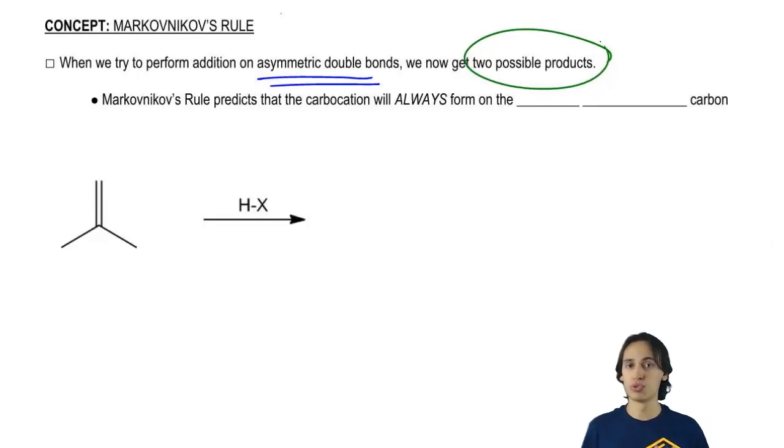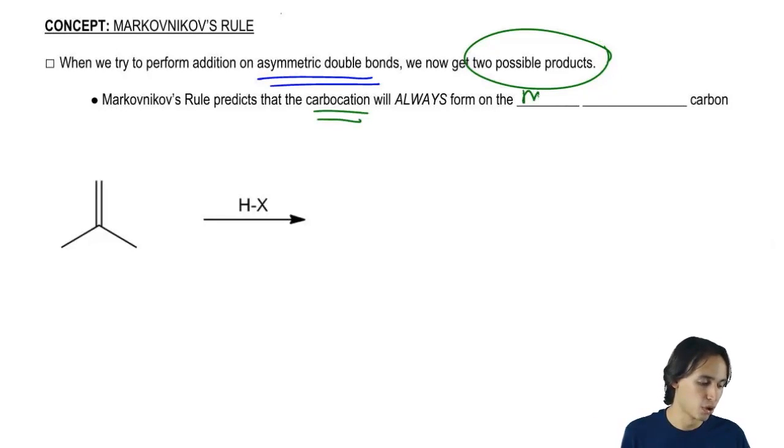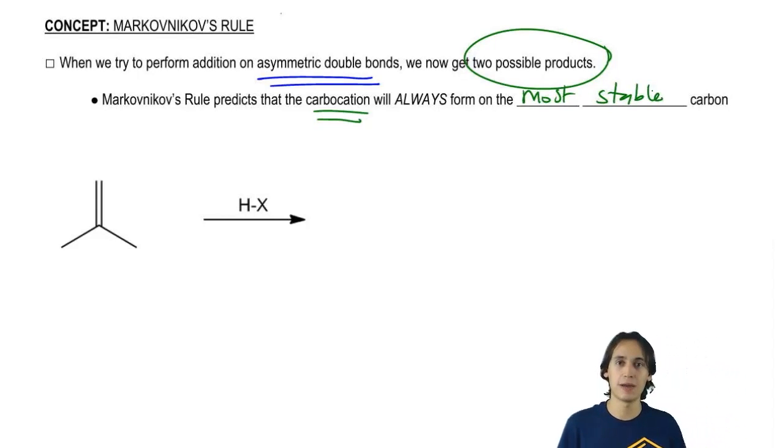Well, what Markovnikov's rule states is that it's going to predict that the carbocation is always going to form on the most stable carbon of the two. Now this is actually the definition of Markovnikov's rule. It states that the intermediate is always going to form in the most stable location.